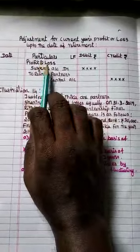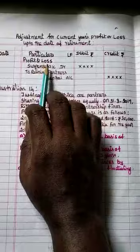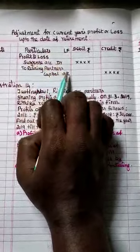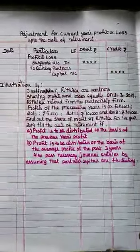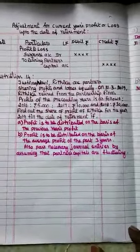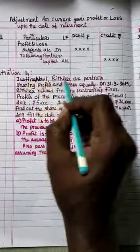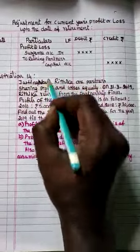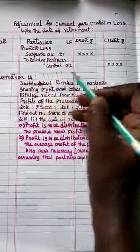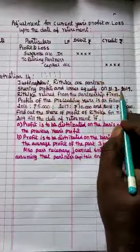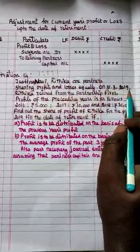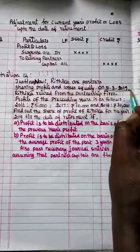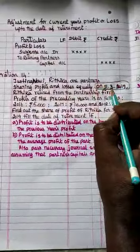The journal entry when calculating profit or loss up to the date of retirement is: Profit and Loss Suspense Account debit, to Retiring Partner's Capital Account. Now in journal number 14, Justina, Navi, and Hrithika are partners sharing profits and losses equally — ratio 1:1:1. On 31st March 2019, Hrithika retired from the partnership firm. The retirement date is given but the academic year period is not mentioned.